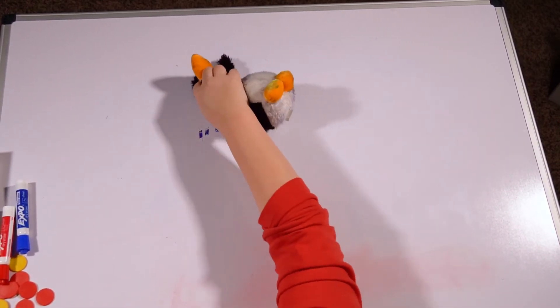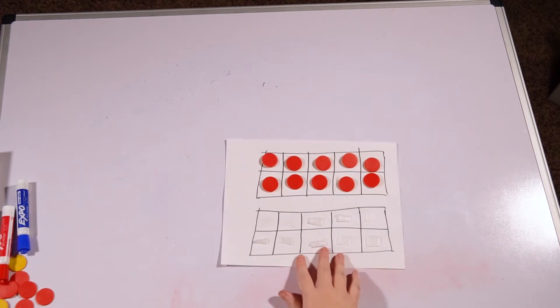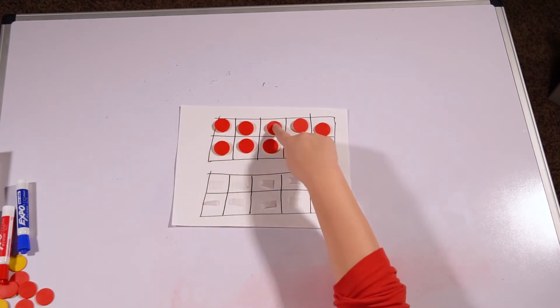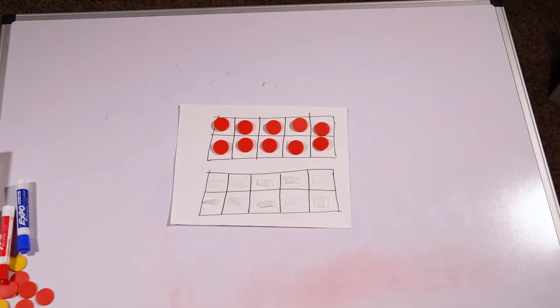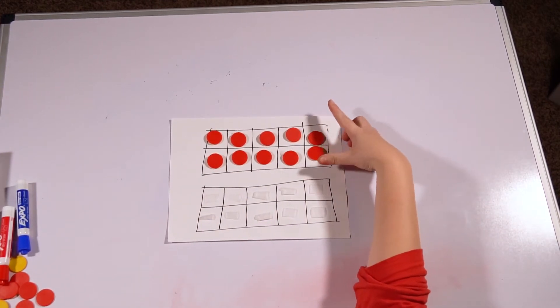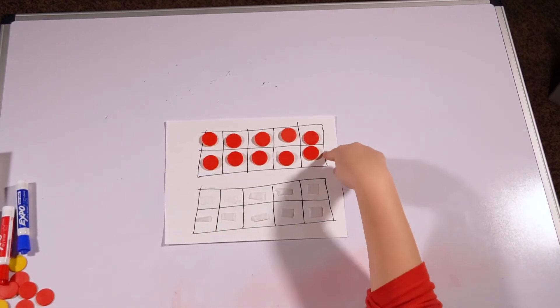We're going to be using that double 10 frame just like we did yesterday. Now, with my double 10 frame, I already have 10 of them filled in. One, two, three, four, five, six, seven, eight, nine, 10. I didn't even need to count them. If I wouldn't have counted it, I still would have known that this was 10 because the whole 10 frame is filled up.